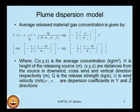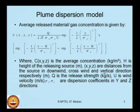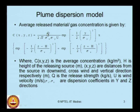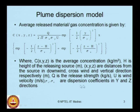C(x,y,z) is the average concentration expressed in kg per cubic meter. H is the height of the releasing source in meters. x, y, z are the distances from the source in the downwind direction, crosswind direction, and vertical direction respectively. Q is the release strength in kg per second, u is wind velocity in meters per second, and sigma y and sigma z are the dispersion coefficients in the y and z directions respectively.